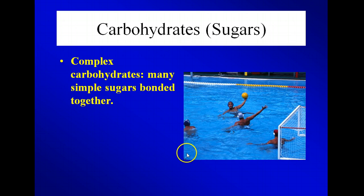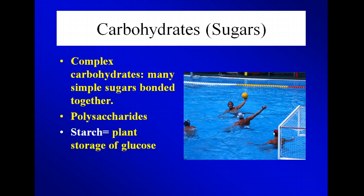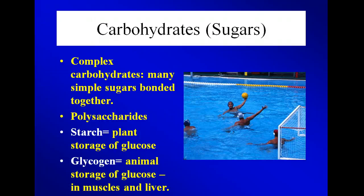Complex carbohydrates are when you have a bunch of simple sugars bonded together — they're also called polysaccharides. Starch is how plants store glucose. A potato, for example, is a bunch of glucose molecules bonded together. To digest it, you eat the potato, break the bonds between each glucose, and those glucose molecules go into your bloodstream and provide your body with energy. Animals store glucose in the form of glycogen, which we can store in our muscle and liver. Athletes and very active people have to store glycogen because they need that glucose to make energy.